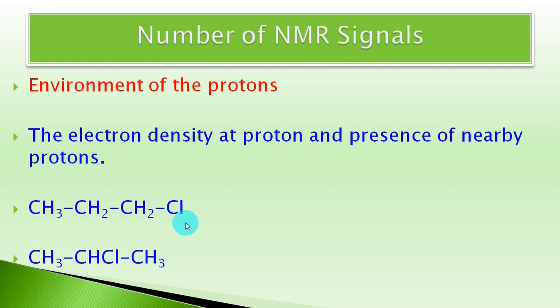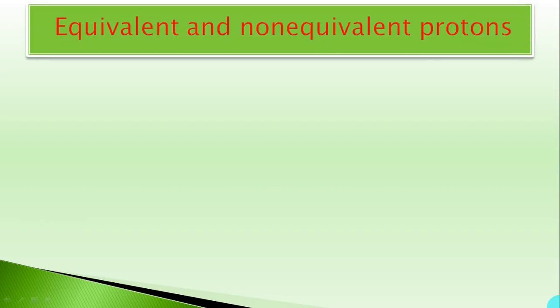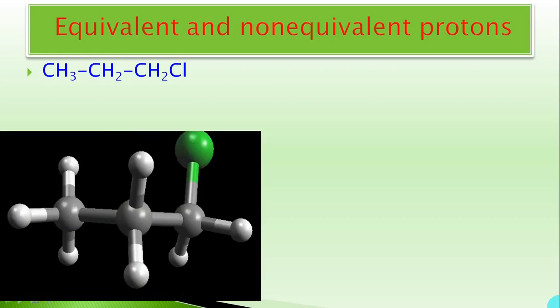We will understand the environment of protons with the help of two molecules: the first one is 1-chloropropane and the second one is 2-chloropropane. Using these two molecules, we are going to understand an important concept in the number of NMR signals — the concept of equivalent and non-equivalent protons.